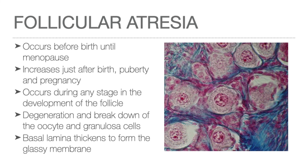Follicular atresia is the degeneration of the ovarian follicles and is a normal process in the ovary. It occurs continually throughout a woman's life, but accelerates during birth, puberty, and pregnancy. It can occur at any stage of follicular development. Atresia results in the degeneration and breakdown of the oocyte and granulosa cells; granulosa cells are shed into the antrum. The basal lamina separating the granulosa cells from the theca folliculi may thicken to form a glassy membrane.